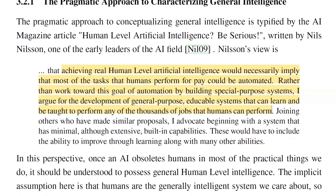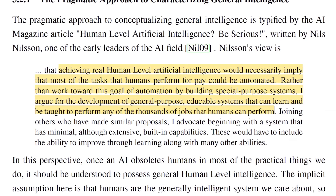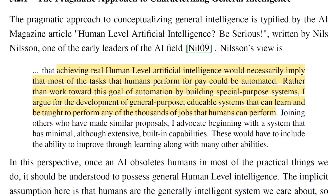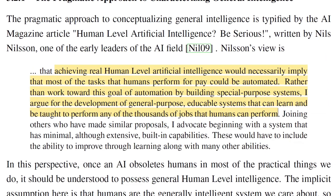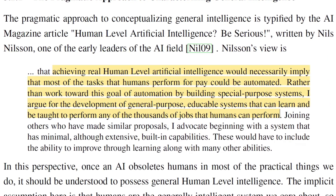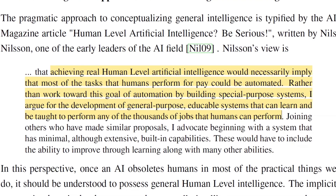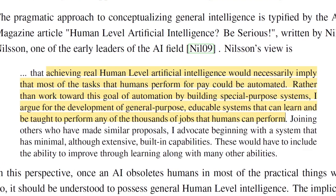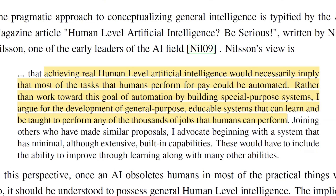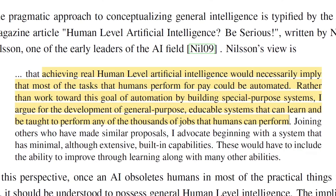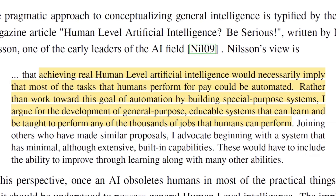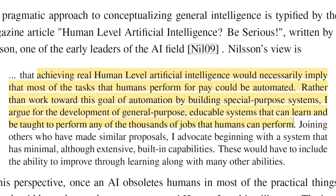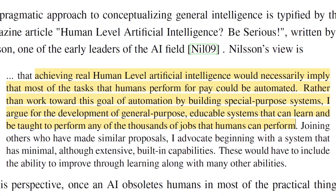Achieving real human-level artificial intelligence would necessarily imply that most of the tasks that humans perform for pay could be automated. Rather than work towards this goal of automation by building special purpose systems, the argument is for the development of general purpose educatable systems that can learn and be taught to perform any of the thousands of jobs that humans can perform. The importance here is that it's a general purpose system.